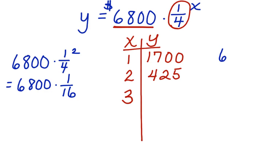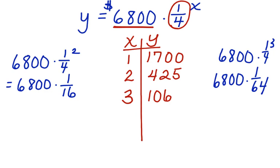Well, we would have $6,800 times one-fourth to the third power, which is the same as $6,800 times one-sixty-fourth, which is another way of saying $6,800 divided by 64. And if we do that, Maggie would be left with $106 and 25 cents.